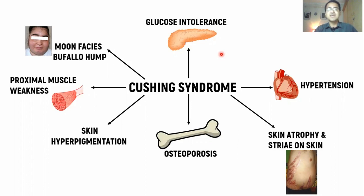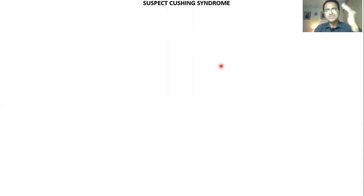Excess cortisol also causes skin hyperpigmentation whenever the excess cortisol is due to excess ACTH secretion, because that excess ACTH stimulates melanocytes resulting in skin hyperpigmentation. Whenever you see these features in a patient and you suspect Cushing syndrome, the next thing you have to do is confirm the presence of excess cortisol in blood.